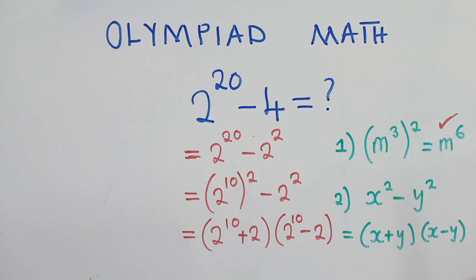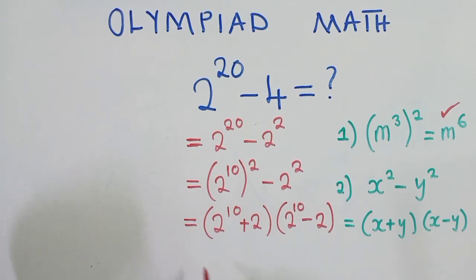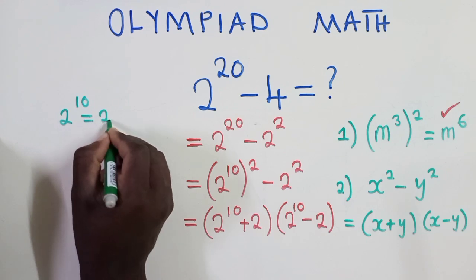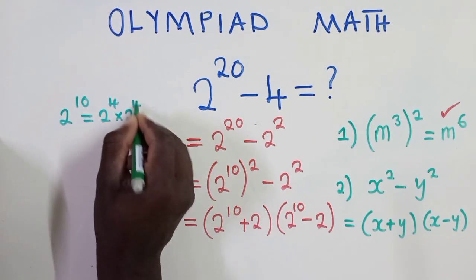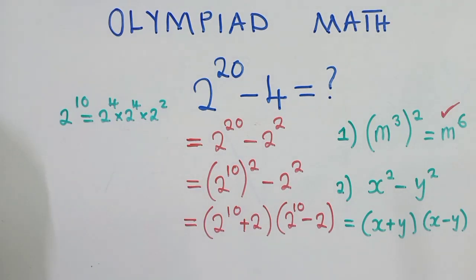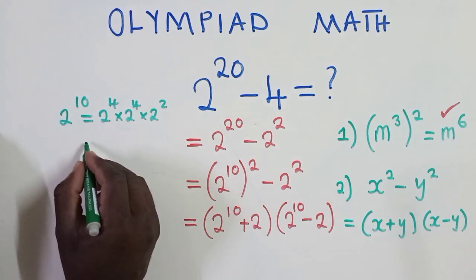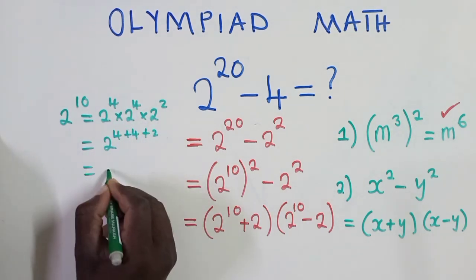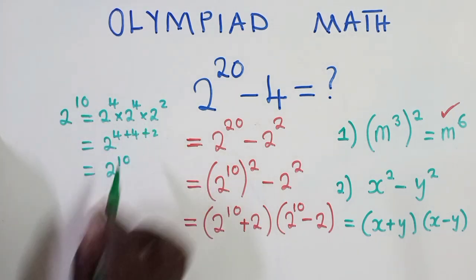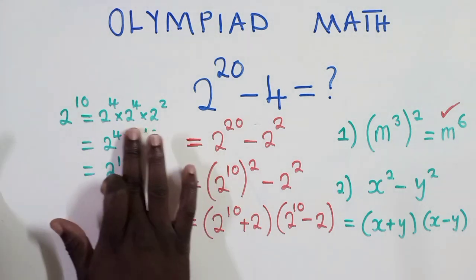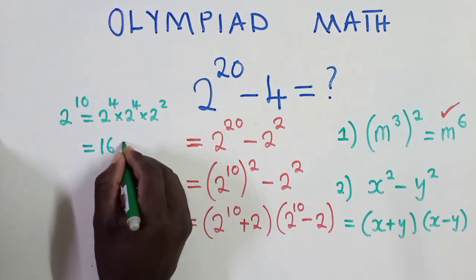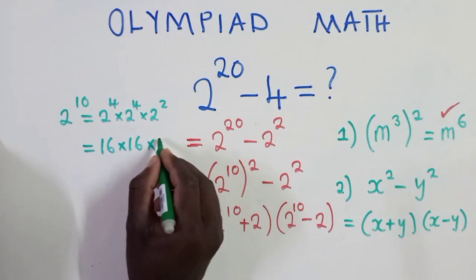So now from this stage, we say this 2 power 10, we work it out. We simplify it. So we know that 2 power 10 is the same as 2 power 4 times 2 power 4 times 2 power 2. Hopefully you are following because we know that laws of indices when you've got the same bases, we get the base and add the powers. So this will simply give us a 10. So what we have here is the same as what is this side.